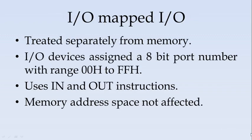Then we get into the IO mapped IO. Here IO devices are treated like IO devices. It is treated separately from the memory. And each of the IO device is assigned an 8 bit port number. Whereas if it is going to be treated as memory, it is a 16 bit address. Here it is an 8 bit port number with range 00H to FFH. It uses IN and OUT instructions. IN and OUT instructions are special instructions to interface with the IO device. And here the memory address space is not at all affected. So IO mapped IO is separate.